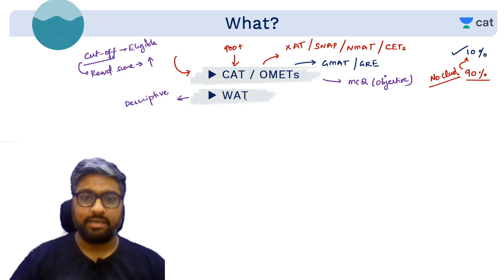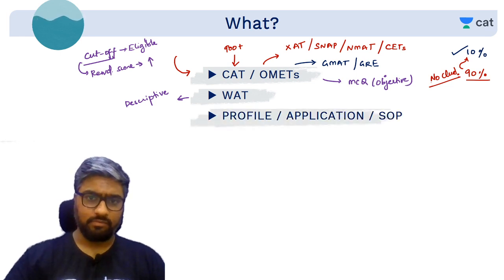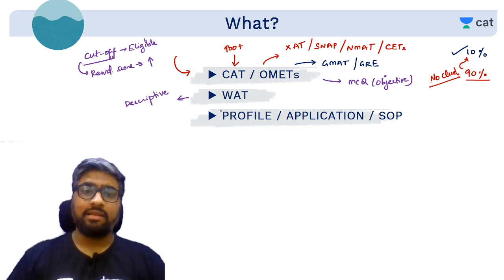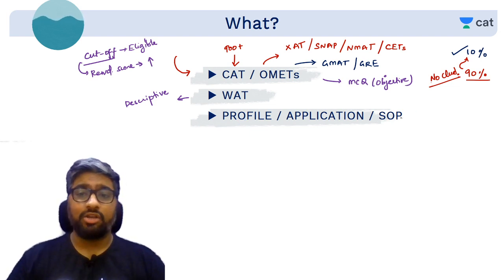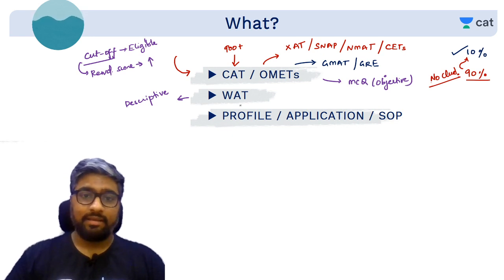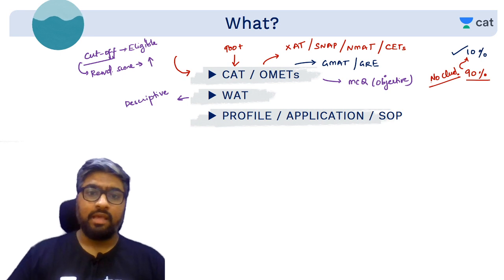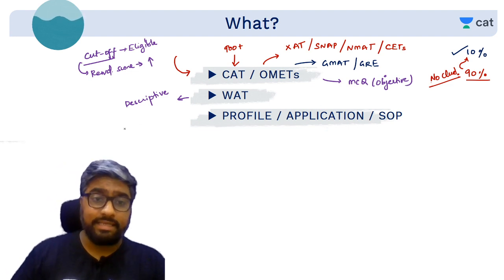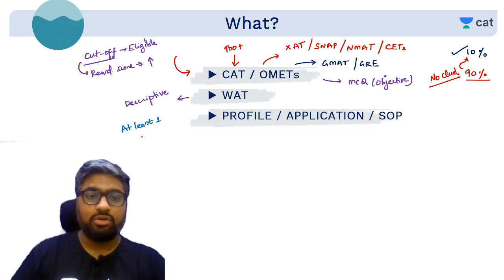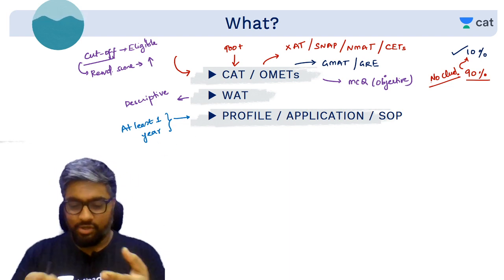Not all colleges conduct WAT, but most do. Once you are done with this round and get called further, your profile comes into picture — not Instagram or Tinder, but your professional profile, your application, or your Statement of Purpose. Working on your profile is not a one-night thing; you would require at least a year to ensure you get the profile they are looking for.